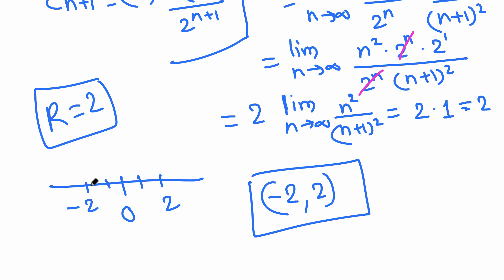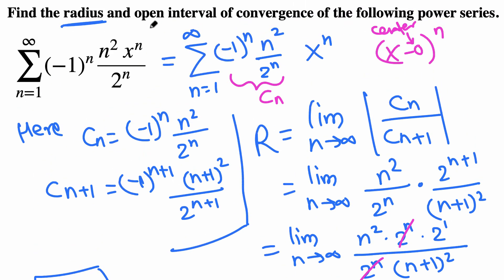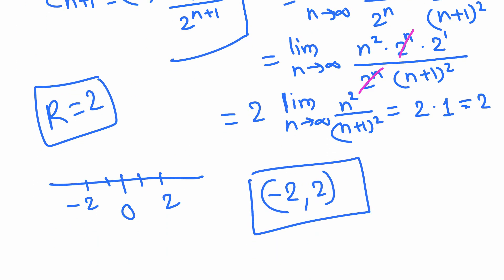What happens at these endpoints? We are not asked to do that in this question because we are only asked to find the open interval. You may watch the video linked below to see what happens at these endpoints. But for now we are done. Radius is 2, negative 2 to 2 is the interval of convergence.